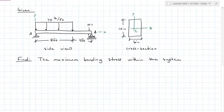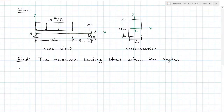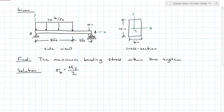Let's say I have a system loaded with 75 pounds per linear foot, with a pin at A and a roller at B. The cross section is 10 inches tall by 6 inches wide. We need to find the maximum bending stress within the system. Our solution begins with the maximum bending stress equation, My over I. To find maximum bending stress, I need the maximum moment, and I'm going to find that with a shear and moment diagram.